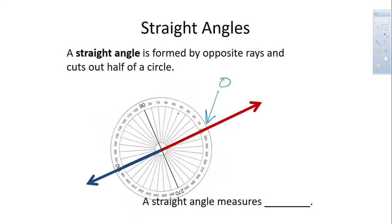So 0, 10, 20, 30, 40 to 90 at the quarter mark, and then wrap it around to this side we've got 180. So a straight angle is defined as opposite rays that cut out half of a circle. The circle is how much? How much is a circle? 360 degrees.